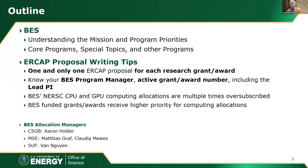We give high priority to active grants or awards, and you need to provide the correct grant number in your ERCAP proposal. If you are not the lead PI of the DOE BES research grant, provide that information by listing that person as a senior investigator, so we know who to work with to verify how the proposal aligns with the research grant.